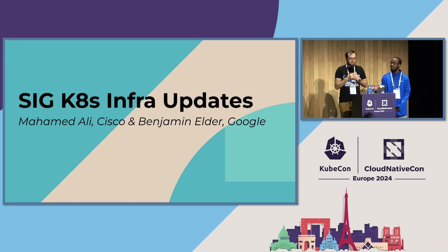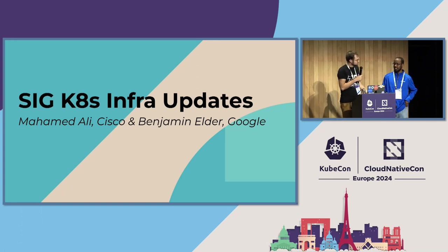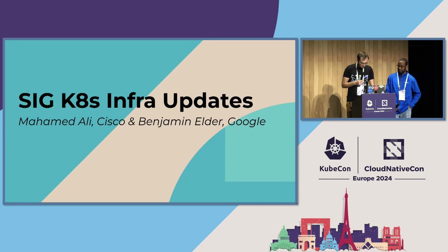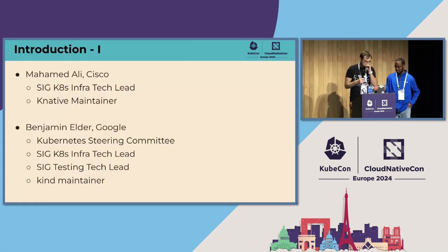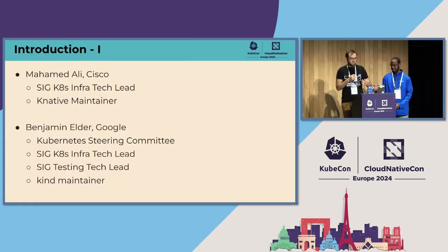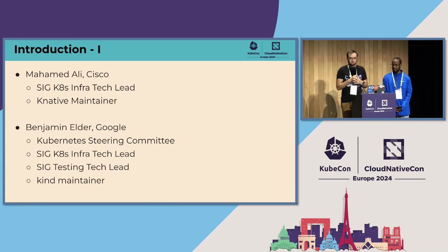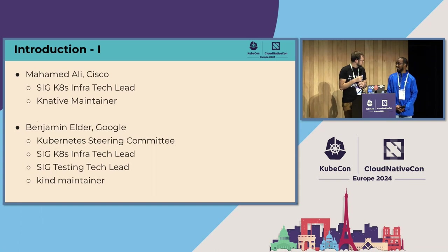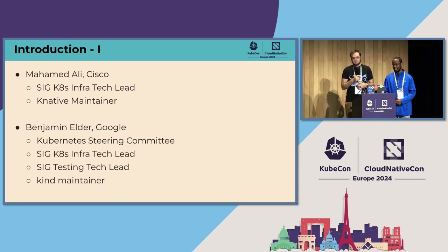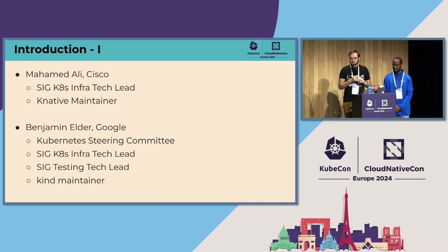My name is Benjamin Elder, I'm a software engineer at Google. That's Mohamed Mali, SRE at Cisco. We are leads in the SIG. Mohamed is a SIG K8s Infra tech lead and a Knative maintainer. And I'm on the Kubernetes steering committee — a SIG K8s Infra and SIG Testing tech lead, and a maintainer of kind.